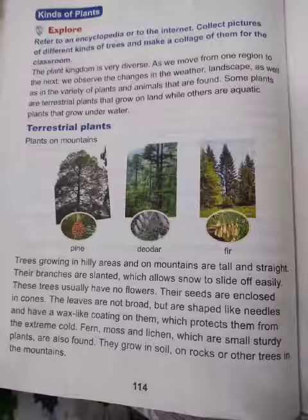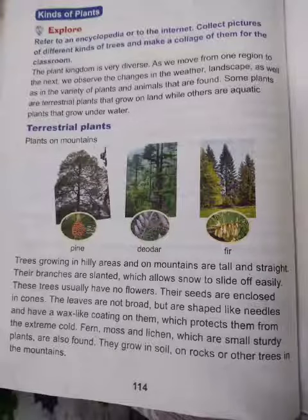Some plants are called terrestrial plants, which grow on land, while others are called aquatic plants, which grow under water. First, let's look at terrestrial plants.